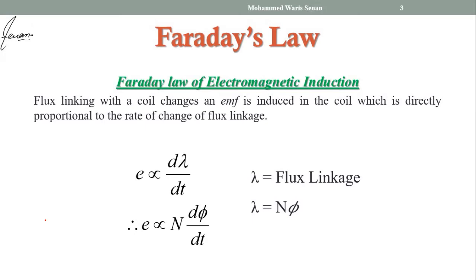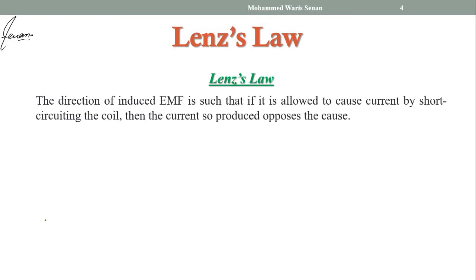According to Lenz's law, the direction of induced EMF is such that if it is allowed to cause current by short-circuiting the coil, then the current so produced opposes the cause. A very important point to note: the EMF which is induced will oppose its cause only if it is allowed to cause current by short-circuiting the coil. When the coil has no closed path for current, the EMF so produced will not oppose its cause. In order to oppose, there must be a closed circuit.